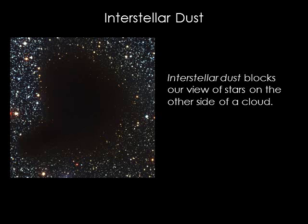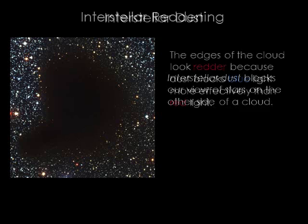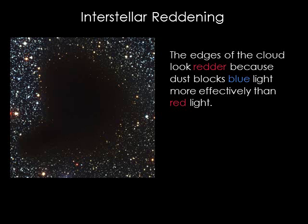Despite the tiny size of these grains, there are enough of them that they can affect how light travels through a molecular cloud. The dust grains either scatter or absorb the visible light that enters a cloud, preventing us from seeing any stars that lie behind it. Also, the edges of a molecular cloud look more red because dust blocks shorter wavelength blue light more effectively than longer wavelength red light.